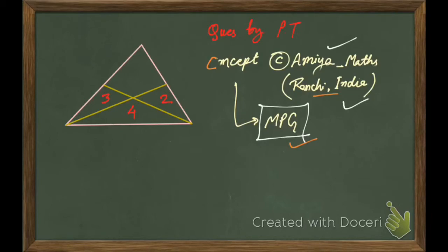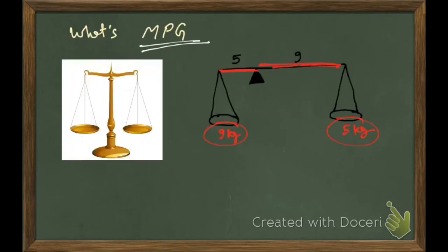The question is: the area of three triangles have been given and the area of the quadrilateral is asked. So we are going to use two concepts, one is MPG and the second is the ratio of areas.